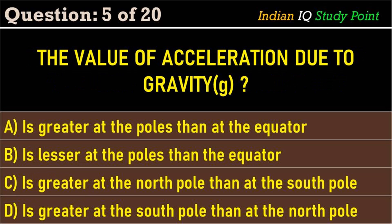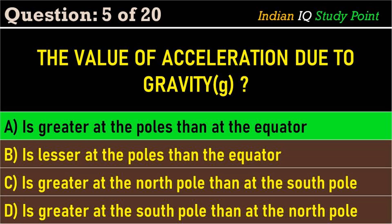Coming to the next question: the value of acceleration due to gravity is — option A: greater at the poles than the equator. Option B: lesser at the poles than the equator. Option C: greater at the north pole than at the south pole. Option D: greater at the south pole than that of the north pole. The correct answer is option A: greater at the poles than at the equator.